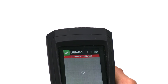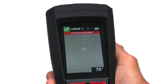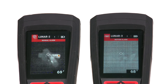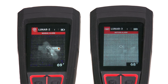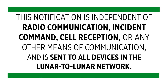It starts with an instant notification that an incident has occurred, communicating who's down and whether the device is in motion, manual, or hardware alarm. This notification is independent of radio communication, incident command, cell reception, or any other means, and is sent to all devices in the Lunar-to-Lunar network.